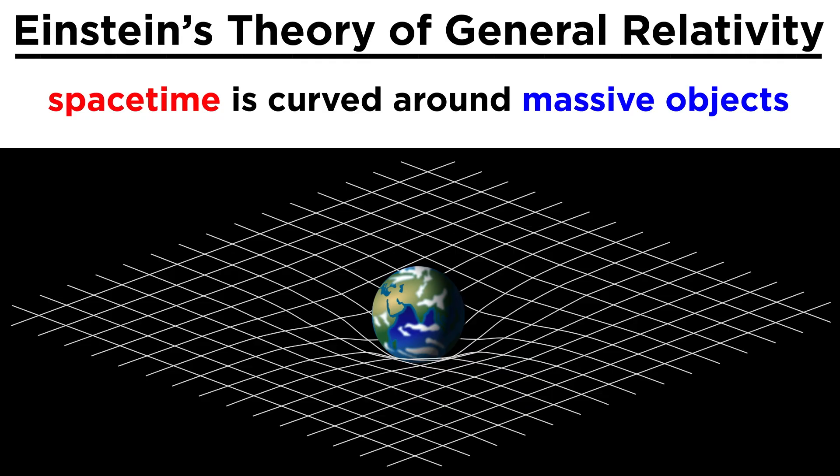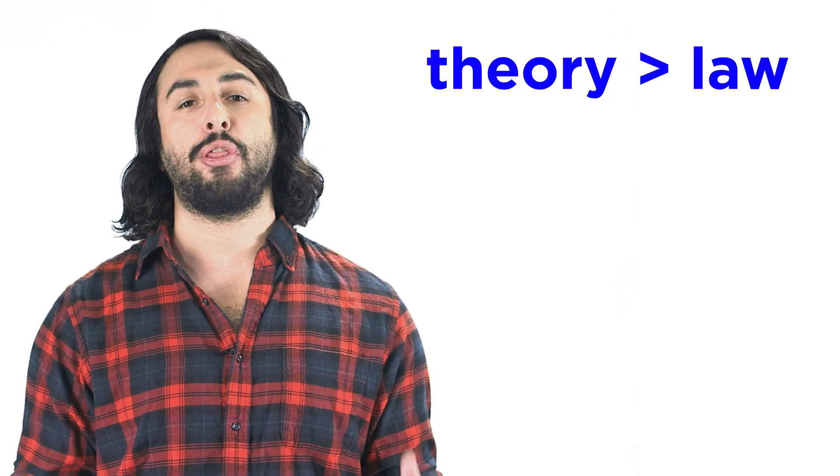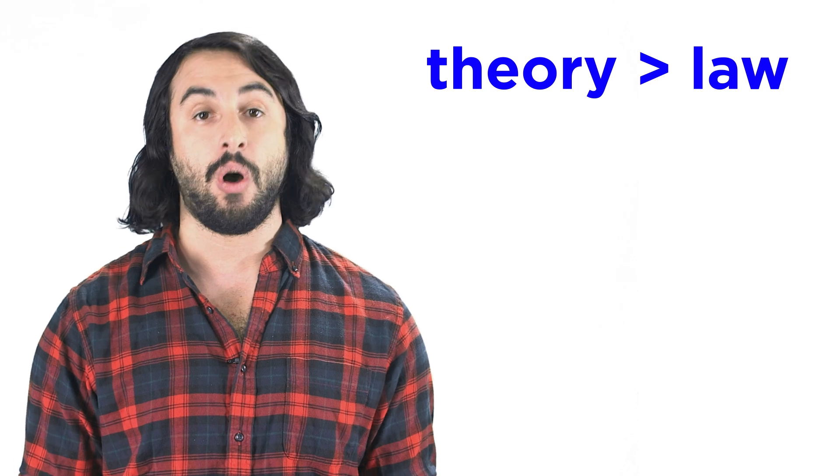For that, we need a theory, like general relativity, which is Einstein's theory of gravity that improved on Newton's. This says that spacetime is warped around massive objects, so the theory explains why an object would fall to the earth, as well as why the planets revolve around the sun. So, in reality, a theory is worth more than a law.